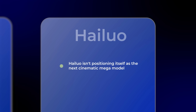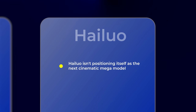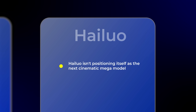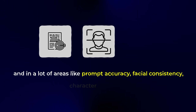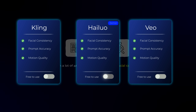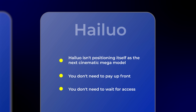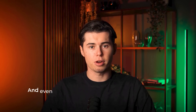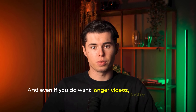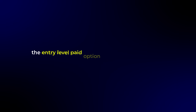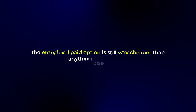Before we move on to the more advanced features inside Hilo, let's just wrap this up. Hilo isn't positioning itself as the next cinematic mega model like VO is aiming to be. But in real world use, it holds its own. In a lot of areas like prompt accuracy, facial consistency, and character movement, it's just as good — if not better — than both VO and Kling. What makes that even more surprising is the fact that it's completely free to try. You don't need to pay upfront, you don't need to wait for access, you just go in and start creating. And even if you do want longer videos, faster renders, or higher resolution, the entry level paid option is still way cheaper than anything else out there.